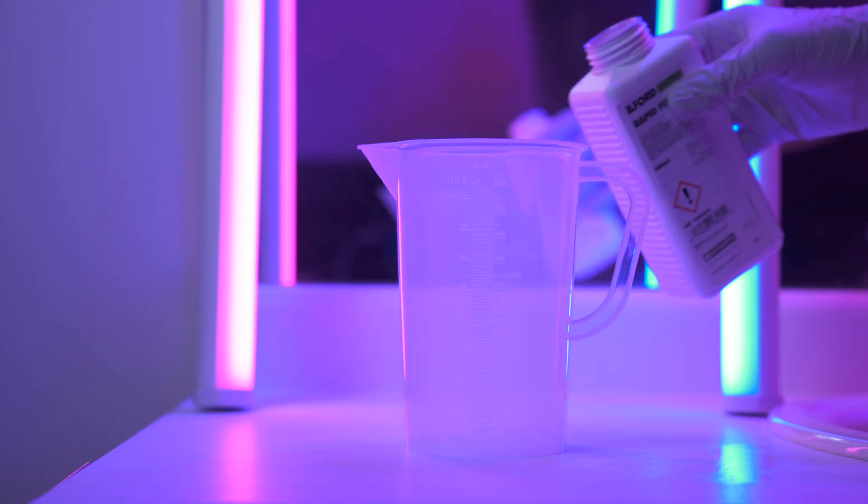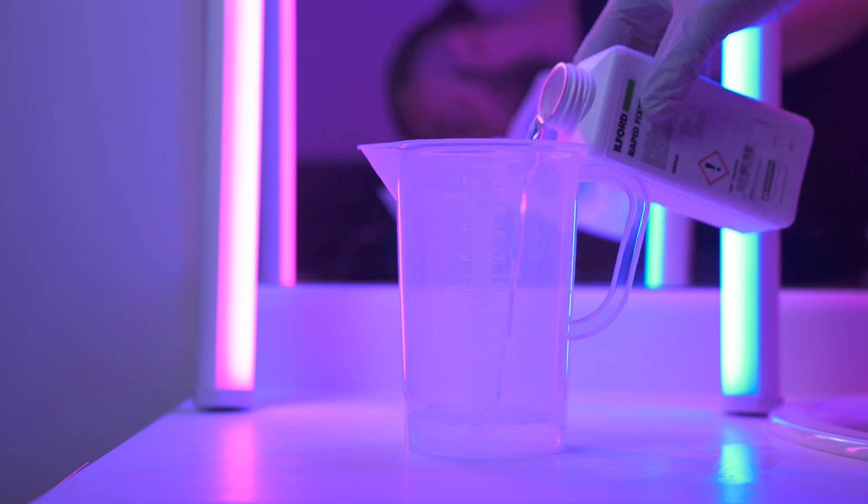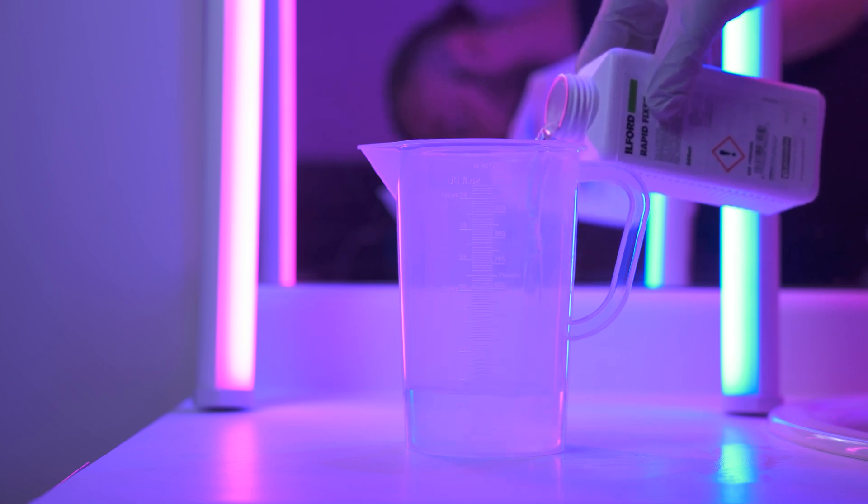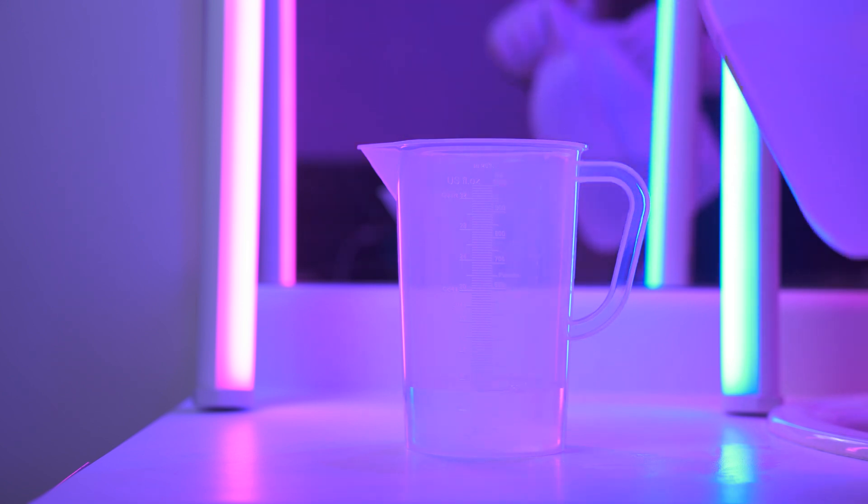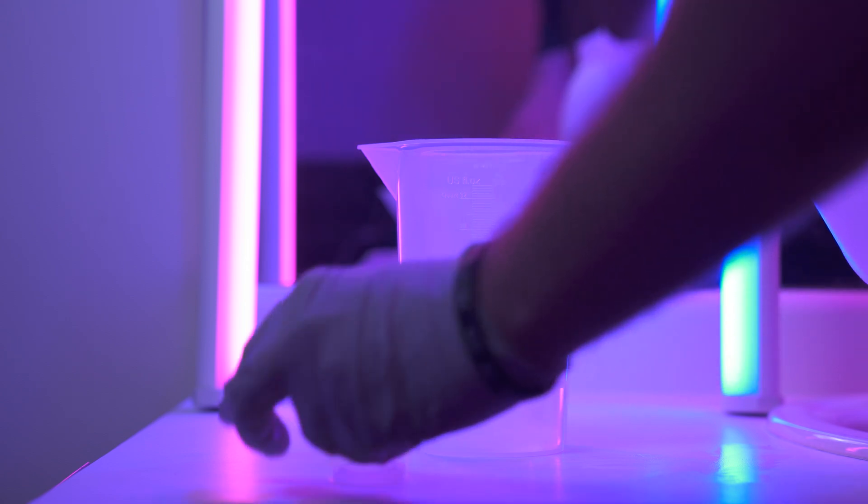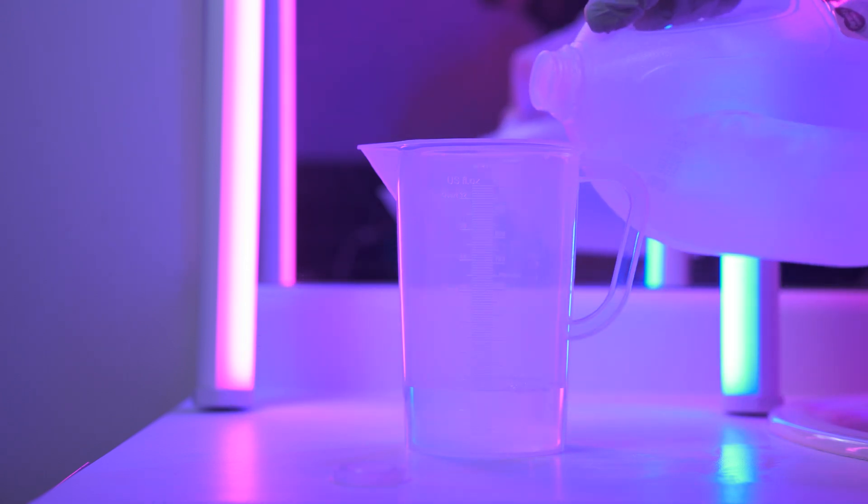To start, pour 200 milliliters of fixer concentrate into the 1,000 milliliter container. Grab your distilled water and fill the container to 1,000 milliliters.